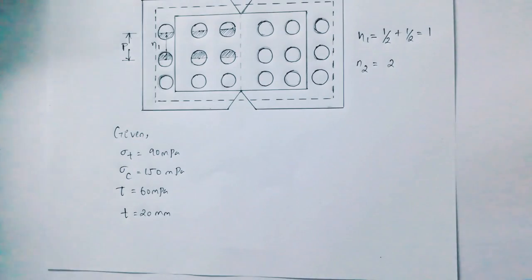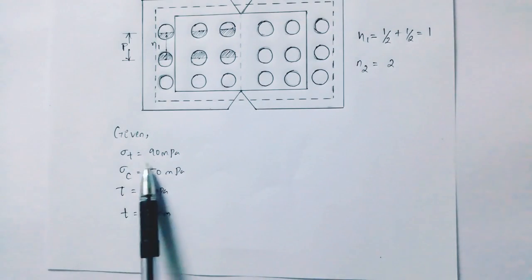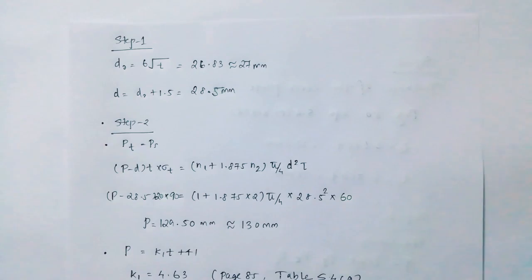Given data: Sigma T equal to 90 MPa, Sigma C equal to 150 MPa, Tau equal to 60 MPa, and thickness t equal to 20 mm.